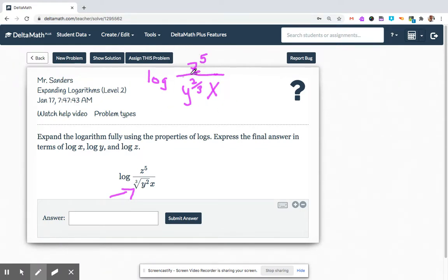the z to the 5th is being divided by all that, so we'll go ahead and change that divide into what? What is divide related to as an operation in exponents? It's related to subtraction. So this one is on top. That means it goes first, z to the 5th, and then minus log y to the 2/3rds, x.